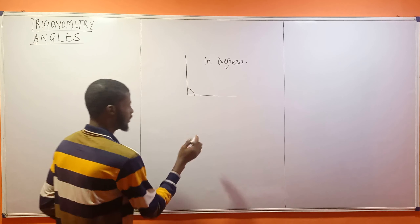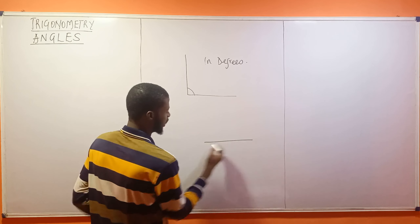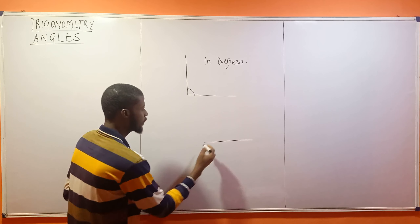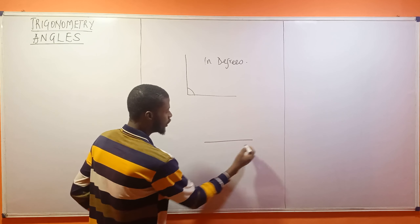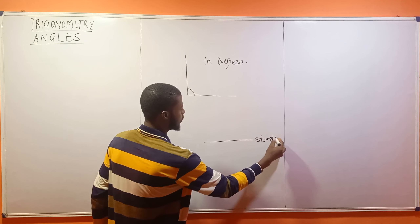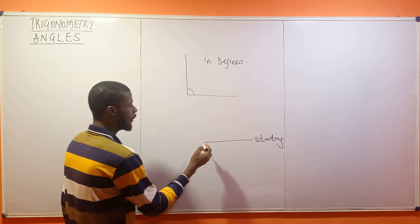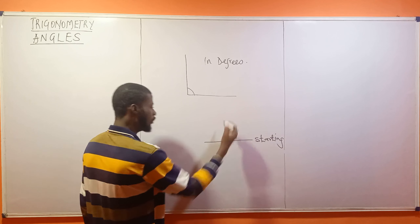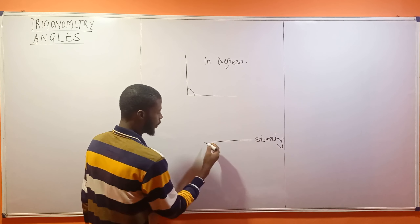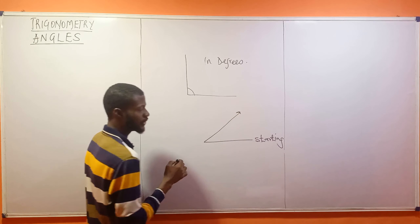An angle can be like this. If I have this straight line here, let me call this the starting point. This very line then starts moving up — we have this very direction. So the angle starts from this point going upwards.